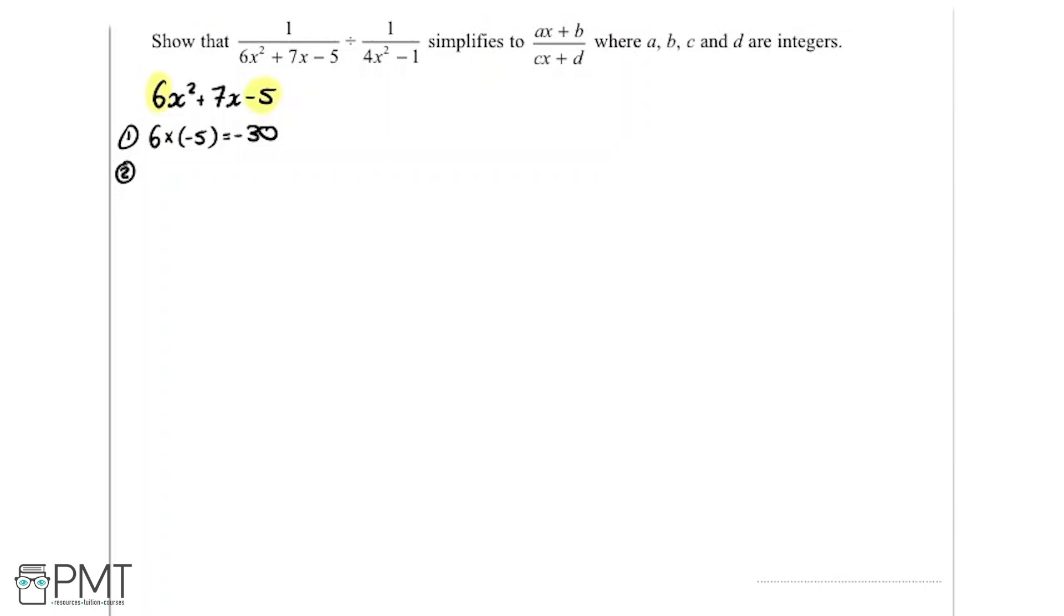We now need to find a set of two numbers that when you multiply them together make this number here, so minus 30 in this case, and when you add them together create this number here, so the coefficient of x, so in this case 7.